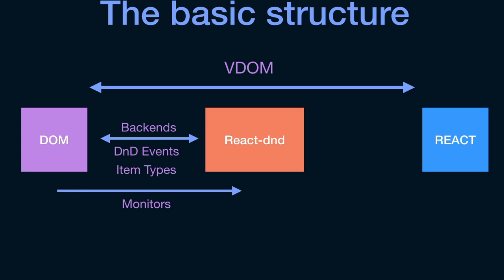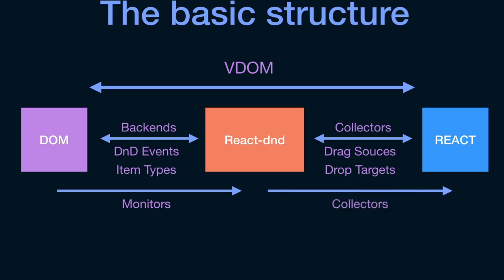On the other side, React DnD interacts with React through collectors, drag sources, and drop targets — three abstract concepts we'll explore in the next videos. Generally, the way React DnD communicates with your own React components is through collectors. So the two main aspects are monitors and collectors, but under the hood there are other things like backends, DnD events, and item types. In the next lecture we'll look at the first half: the interaction between React DnD and the DOM.